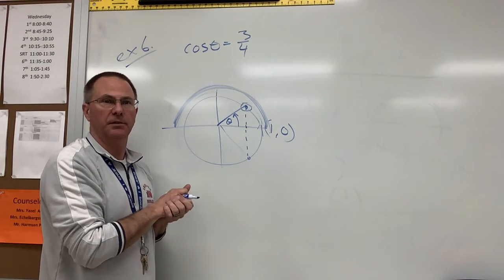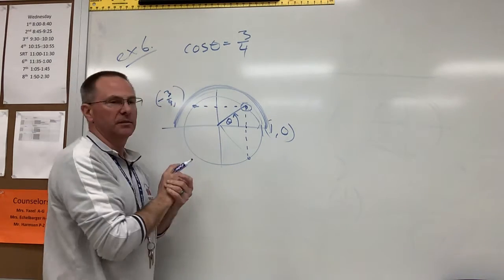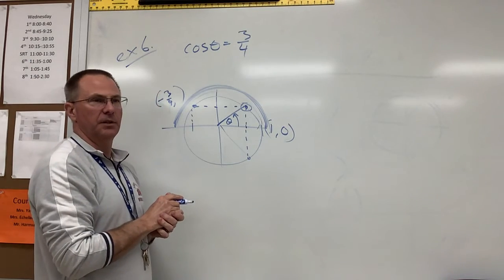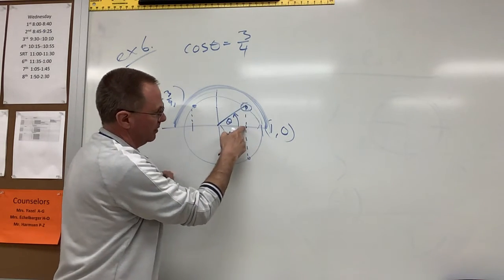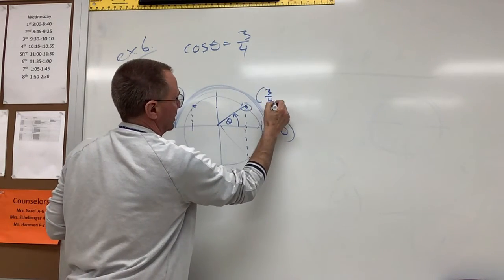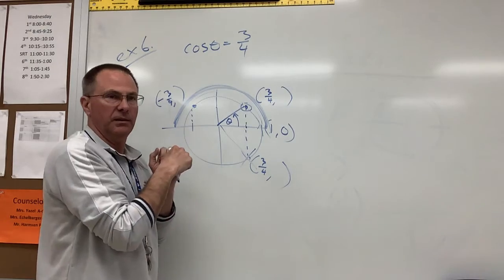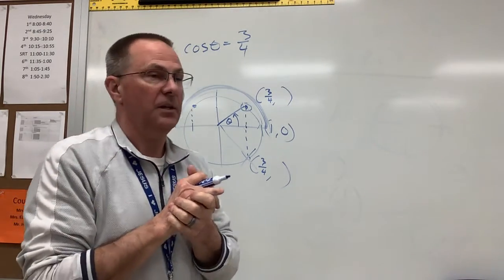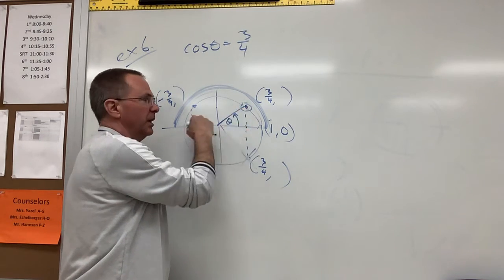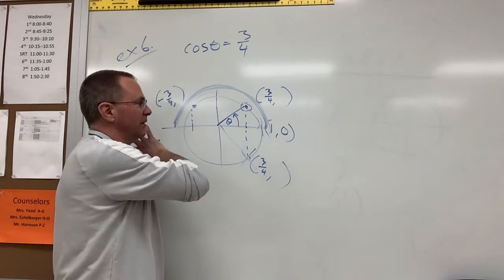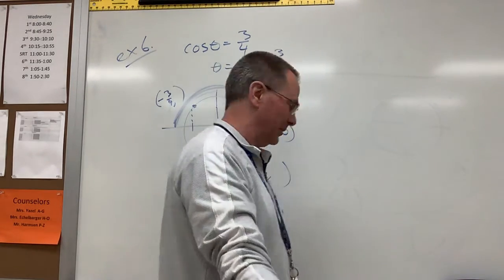If I go the other direction, x would be negative three-fourths — that's a different x value. For positive three-fourths, there's only one position between 0 and 180 degrees. The answer is just the arc cosine of three-fourths — put that in your calculator and you get the right answer: approximately 41.4 degrees, which is also the reference angle.